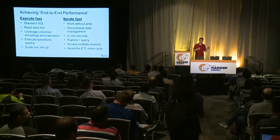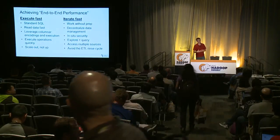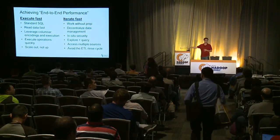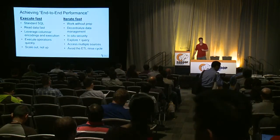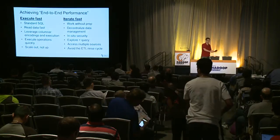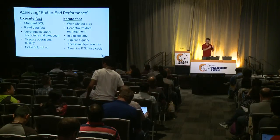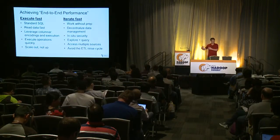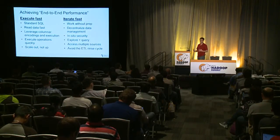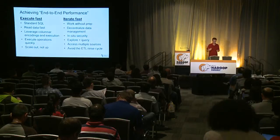Beyond executing fast — which is table stakes — you also need to iterate fast. Most other systems have dropped the ball here. You want to work without prep, decentralize data management, avoid going through a central data engineering organization, do in-situ security without a secondary security model, and support an explore-and-query cycle. If you have to use two different systems to explore and then query, it slows you down substantially. Access to multiple sources and avoiding the ETL rinse cycle are key.